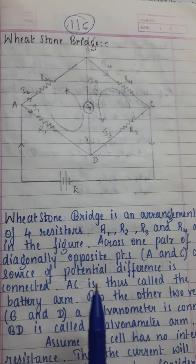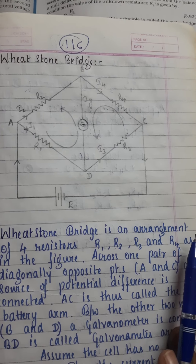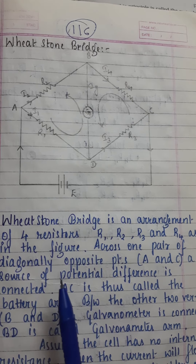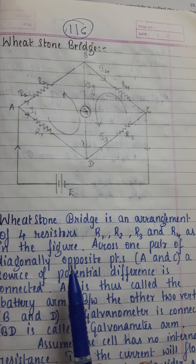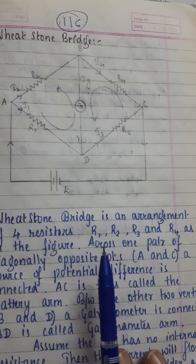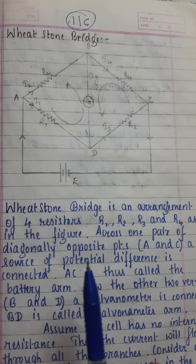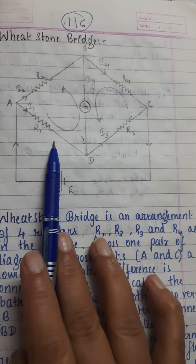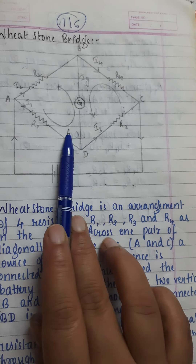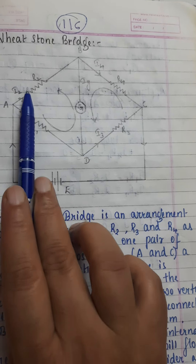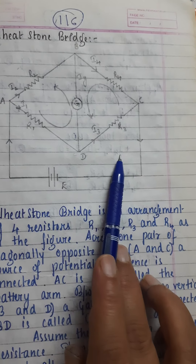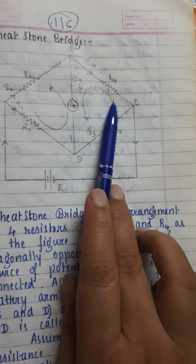Wheatstone Bridge is a very important bridge. It is used to find the value of resistors. Let's understand its circuit — it has resistors R1, R2, R3, and R4 connected in a specific way.